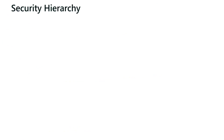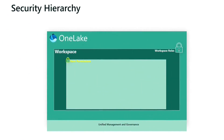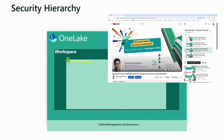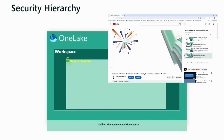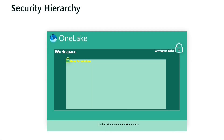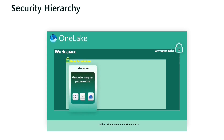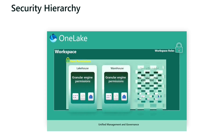In my previous video, I discussed in great detail the data access control using workspace roles and item level permissions. If you haven't gone through those two data access control permissions, I would recommend watching those two videos before diving into this session. The next level of permissions in this data security hierarchy can be set within specific compute engines like lake house, data warehouse, and semantic models.